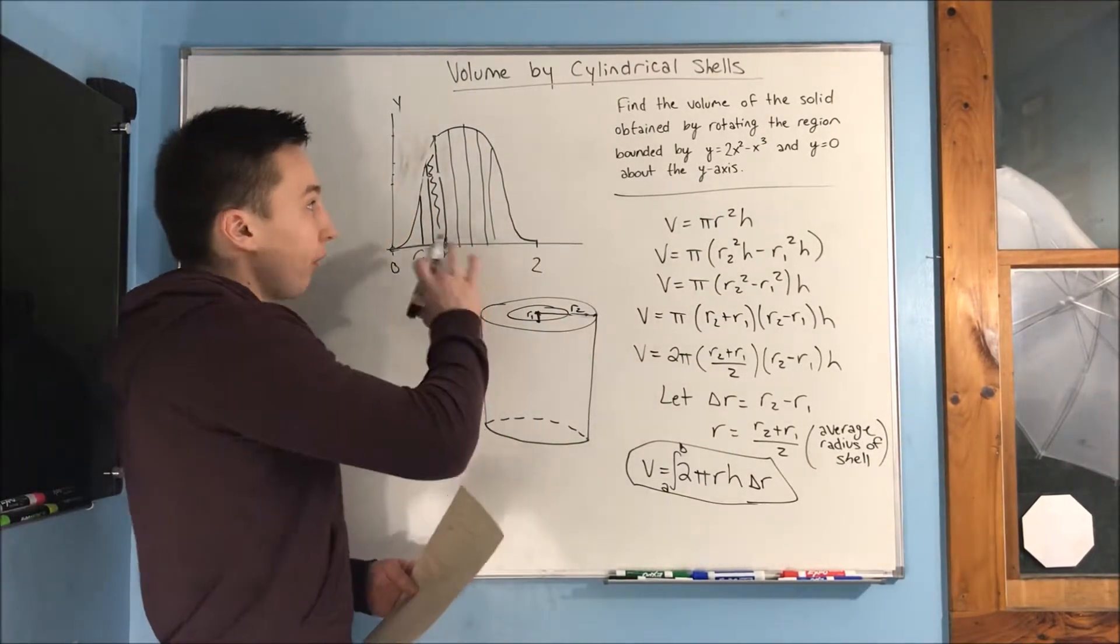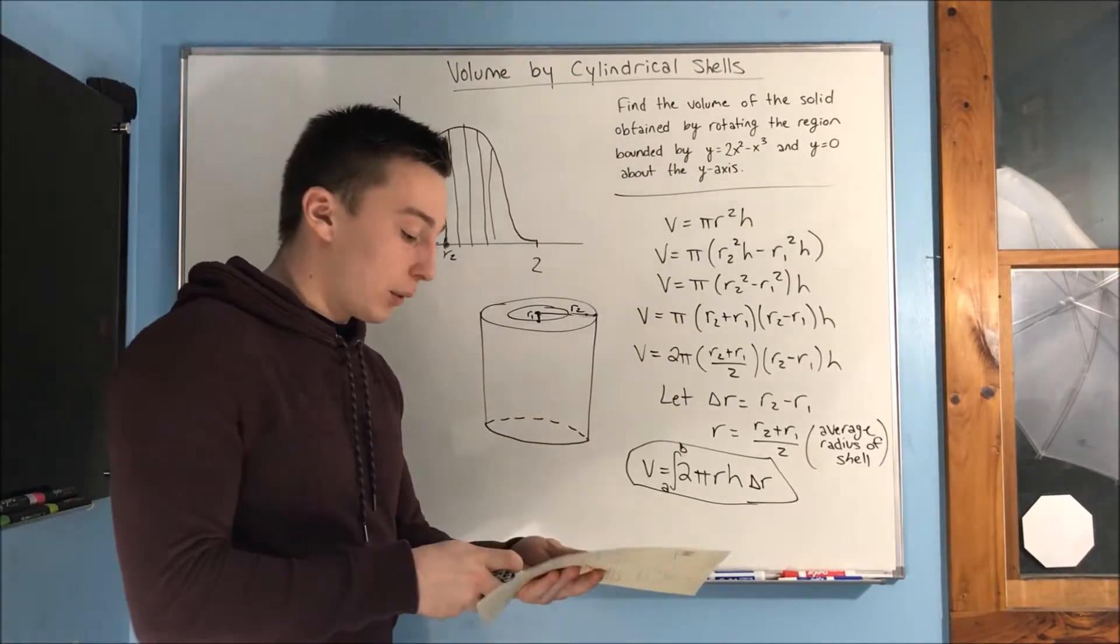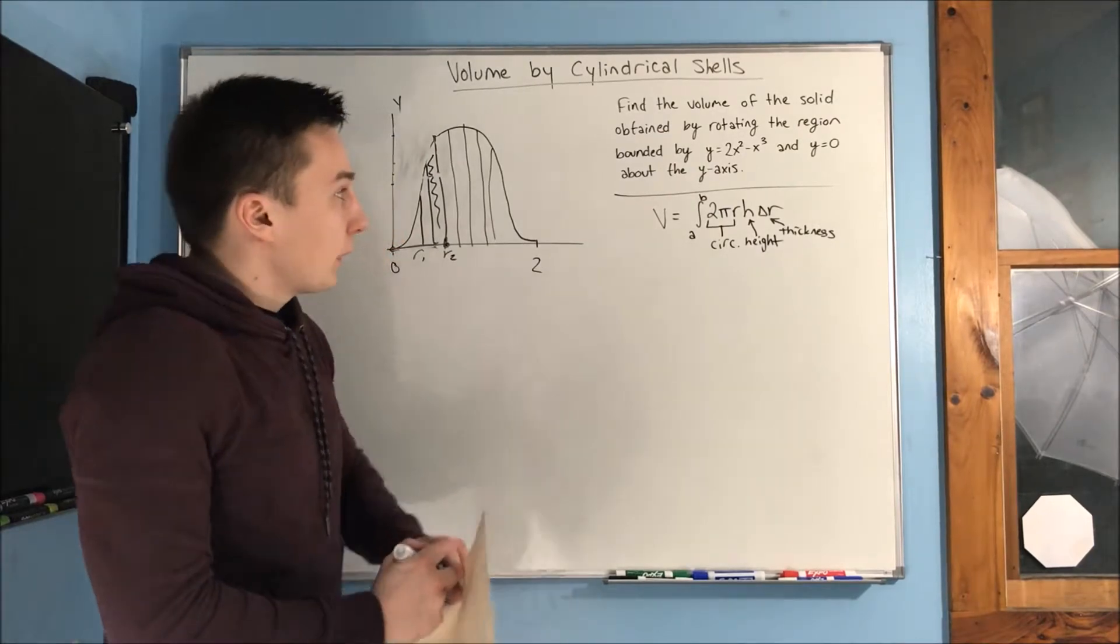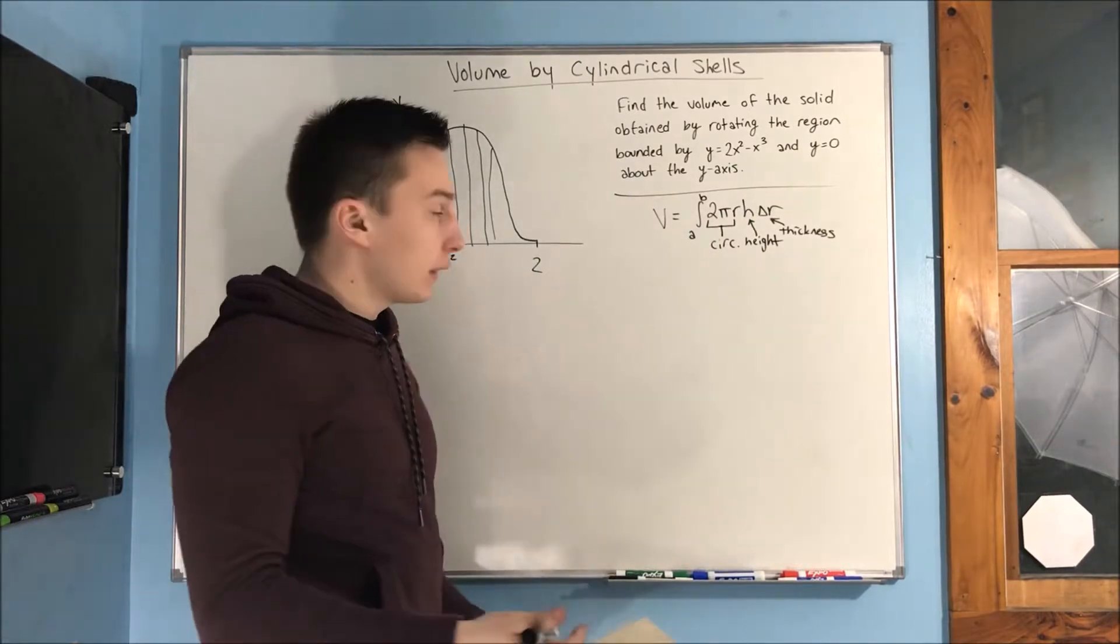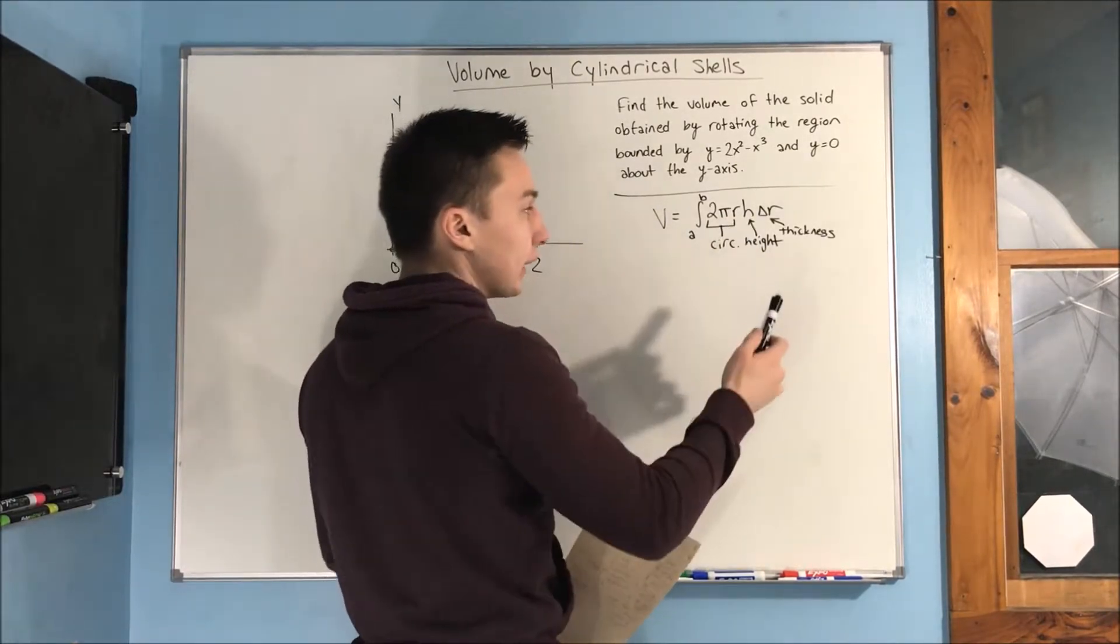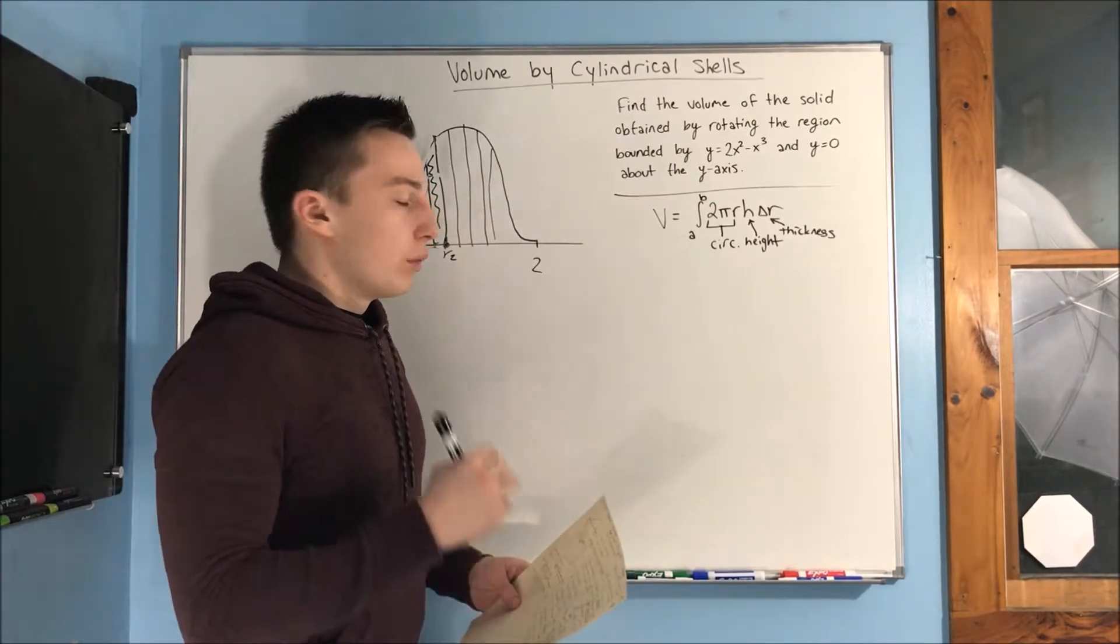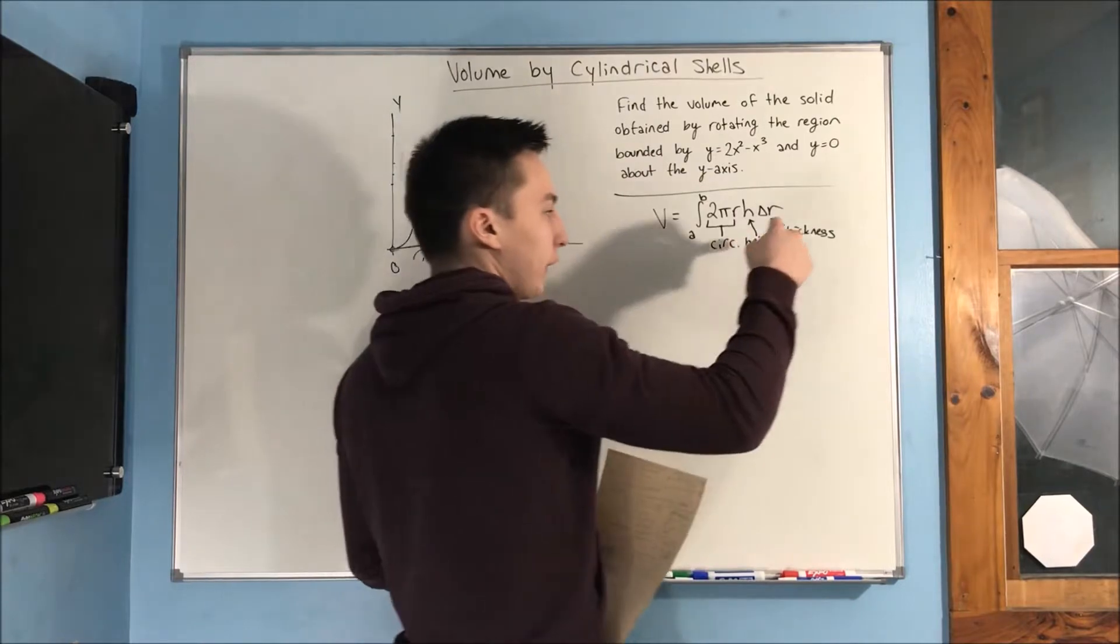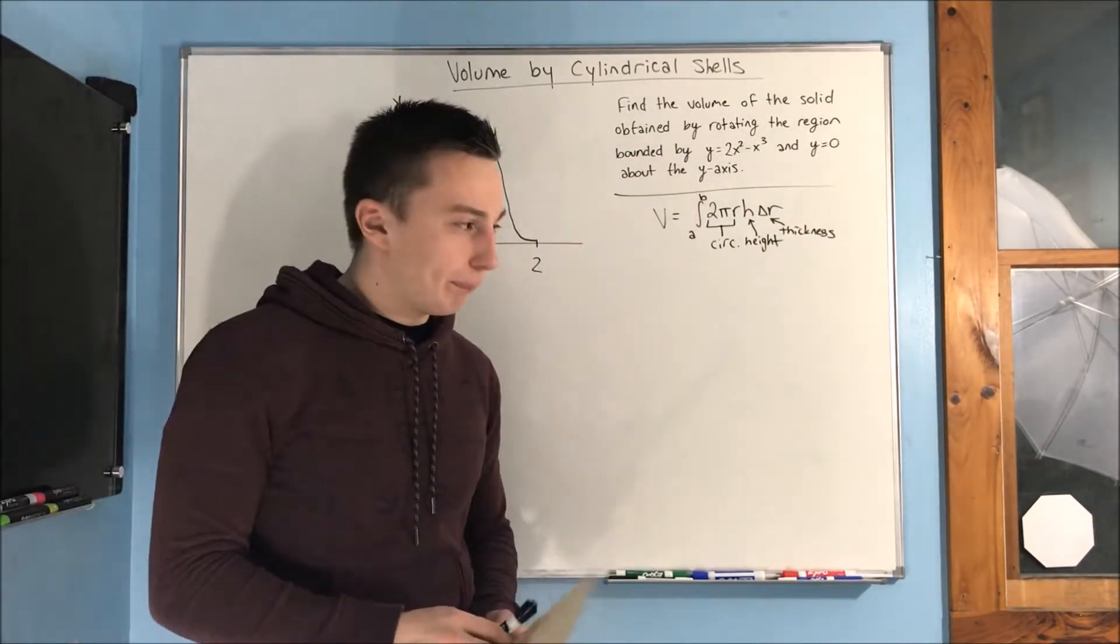So, let's solve this problem using cylindrical shells. I'll show you guys how this actually works. So, first, I wanted to start off with our equation again. Notice that 2 pi r is the circumference, h is the height, and delta r is the thickness. So, if you want to remember this formula in an easy way, it's circumference times height times thickness. And, you integrate it. That's really it.